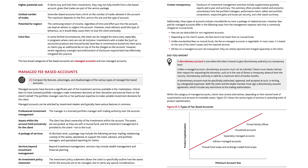A discretionary account is one where the client chooses to give discretionary authority on a temporary basis. Unlike a managed account, discretionary accounts must not be solicited. Clients must clearly indicate their reasons for requesting the discretion, such as in the case of illness or temporary absence from the country. Discretionary authority is valid for a maximum term of 12 months. A discretionary account must be specifically authorized, approved, and accepted in writing by a designated supervisor. Both the client and the dealer member must sign a discretionary account agreement, which includes any restrictions to the trading authorization.